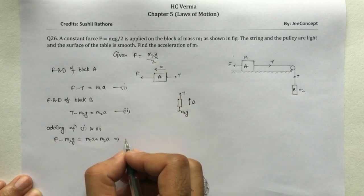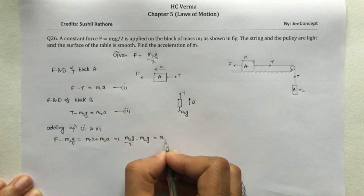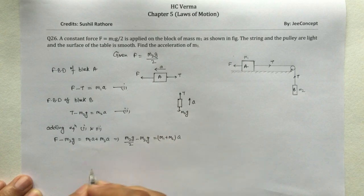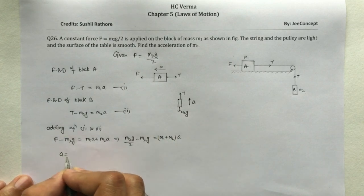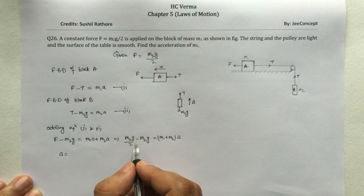Now if I replace the value of F with m2g/2, this will become m2g/2 - m2g = (m1 + m2)*a. So this acceleration will become: 1/2 - 1 is -1/2, so that means -m2g/(2(m1 + m2)).